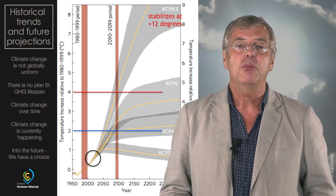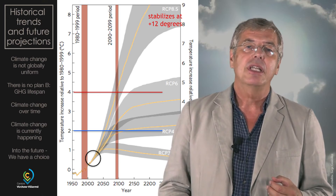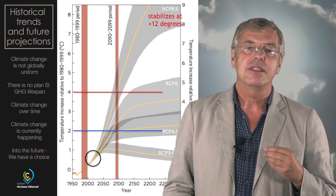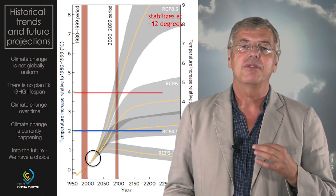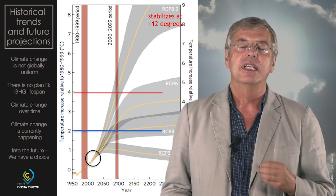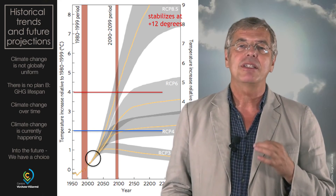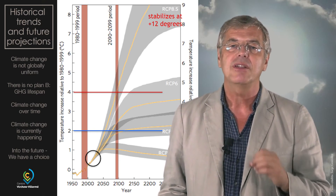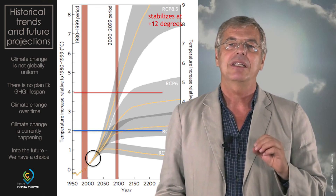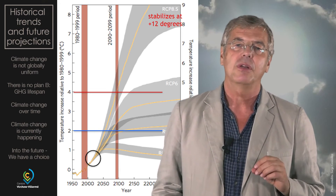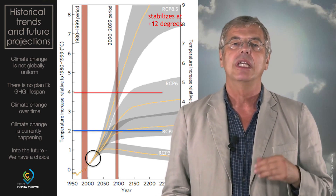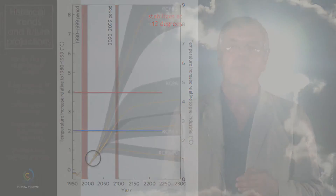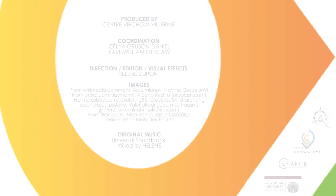In a four-degree world, particularly under the high scenario, scientists — and I was part of this group — have said that the capacity of the human body to thermoregulate may be exceeded on a regular basis, particularly during manual labor, raising serious doubt about the habitability of some areas.